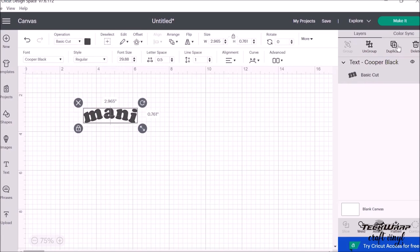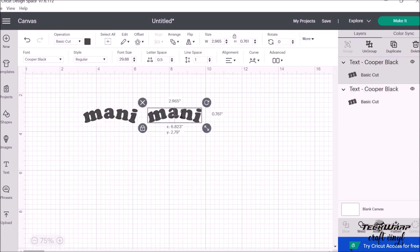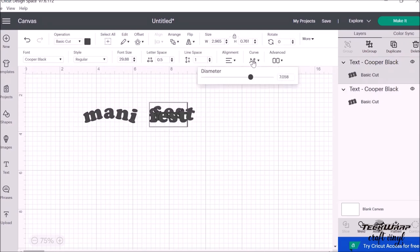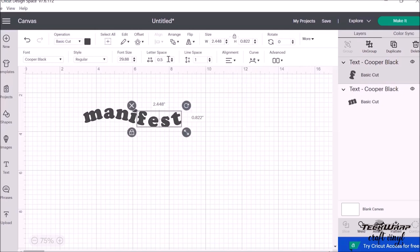Then I'll duplicate the text and type the remaining word and also play around with the diameter. Then I just need to place it near the first text and also edit the letter spacing to look similar to the first text.